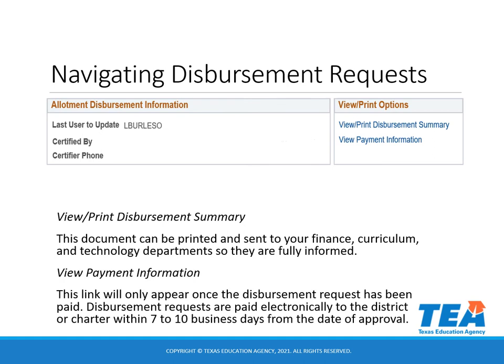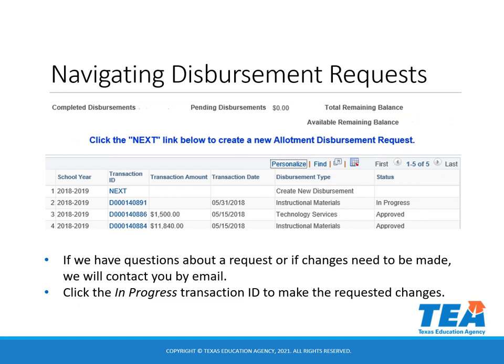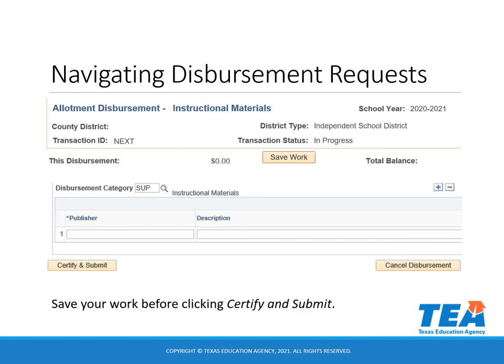In the View Print Options box, there are two links that will appear. The View Print Disbursement Summary link — this document can be printed and sent to your finance, curriculum, and technology department so they are fully informed. The View Payment Information link will only appear once the disbursement request has been paid. Disbursement requests are paid electronically to the district or charter within 7 to 10 business days from the date of approval. If we have questions about a request or if changes need to be made, we will contact you by email. Click the In Progress Transaction ID to make the requested changes. Be sure to click Save Work as you add information to your disbursement request and before you certify and submit.